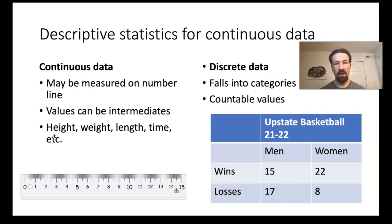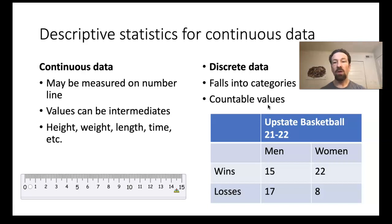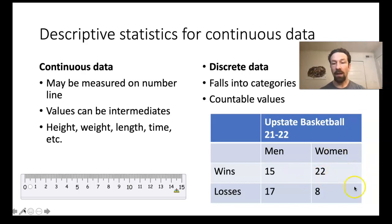This is in contrast to discrete data, which falls into clear categories and must consist of countable, whole-number values. Examples of discrete data include the numbers of wins and losses of the Upstate basketball team—we can classify each observation into one of four different categories. For discrete data, we count the number of occurrences in each category; for continuous data, we measure along a continuous number line.